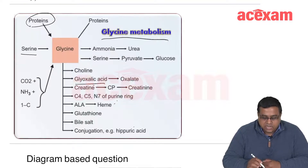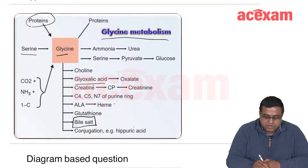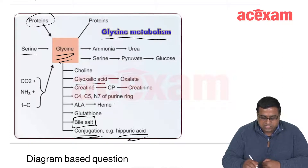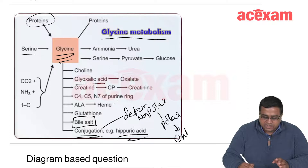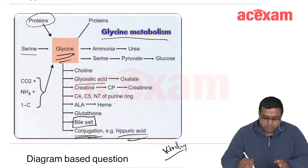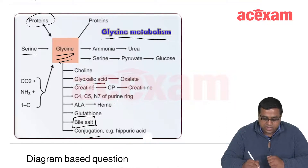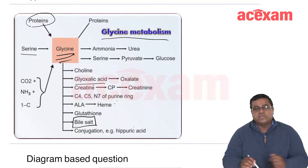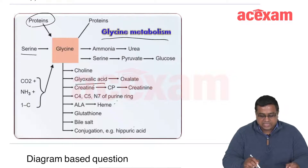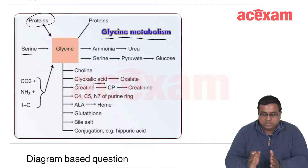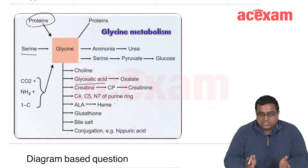Bile salts — glycocholic acid and glycodeoxycholic acid — are also derived from glycine. Glycine is also required for the conjugation process, which is the detox mechanism that makes a non-polar molecule polar so it can be excreted by the kidney. Each amino acid has its own set of important derived products, and you need to know those key products for MCQ preparation — not the entirety of each metabolic pathway.